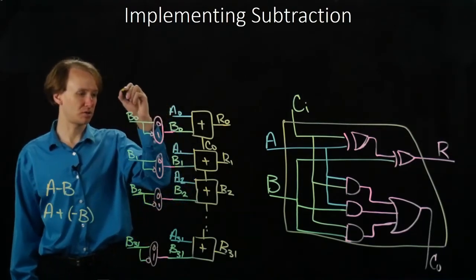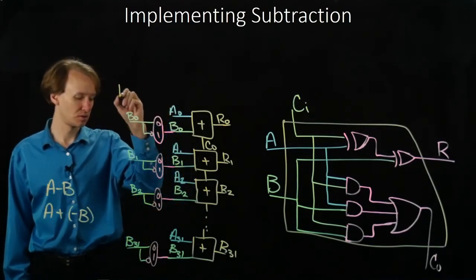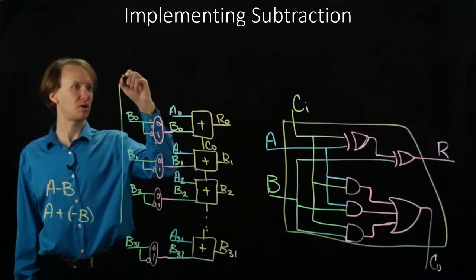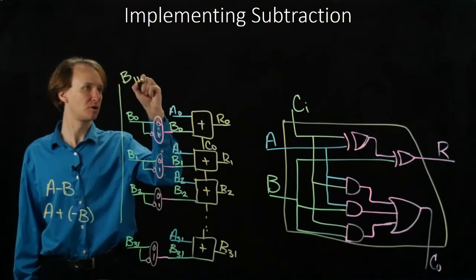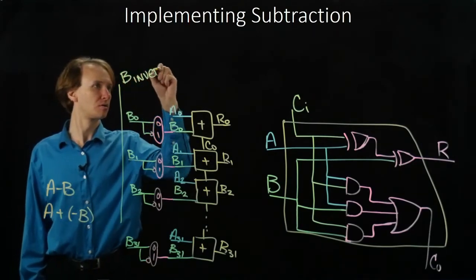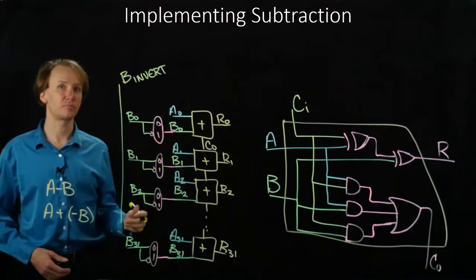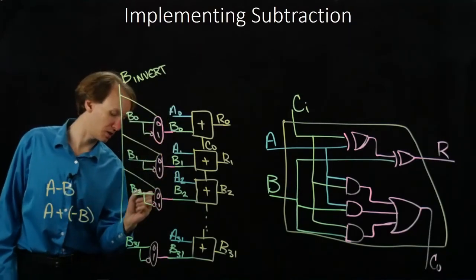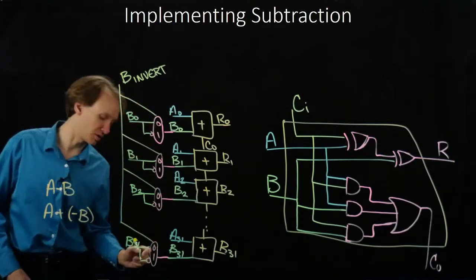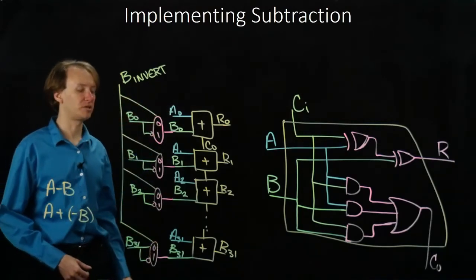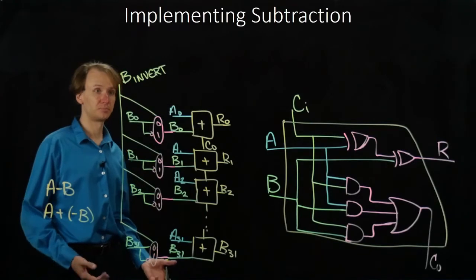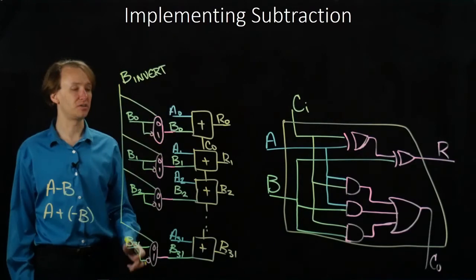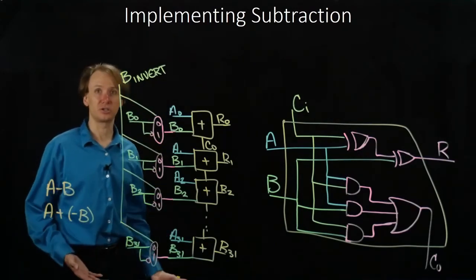And I'm going to want all of those conditioned on the same selector bit. I will name this one B invert because it inverts B. And I will just connect it to all the various B multiplexers that we've got there. So if I set B invert to 0, then we just pass B through and we get our addition as normal.